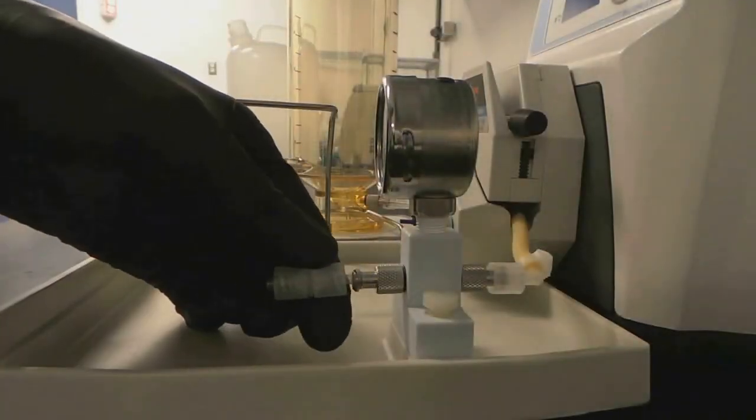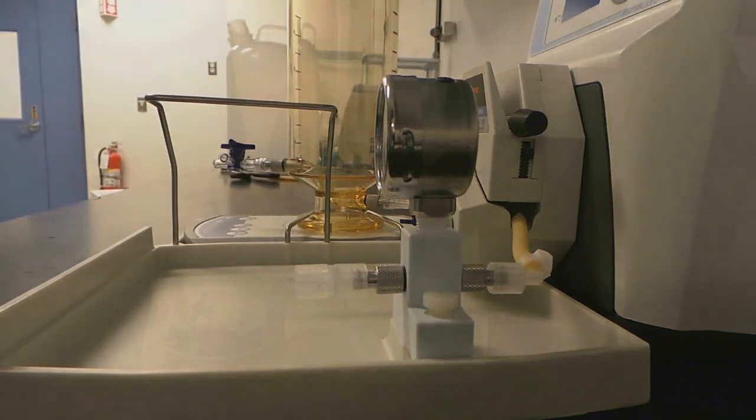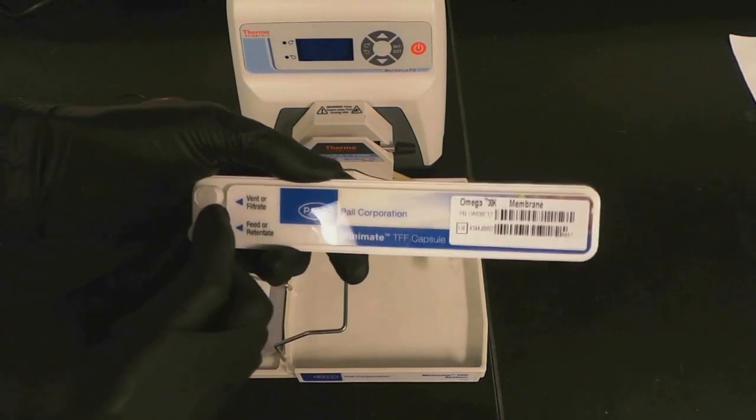Attach the lure coupler to the other side of the pressure gauge, and then attach the feed retentate port of the MiniMate cassette to the pressure gauge.